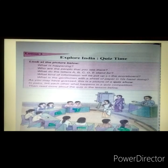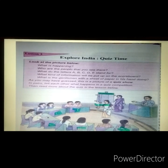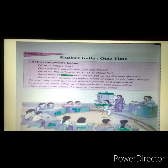What kind of information will be put up on the scoreboard? The scoreboard will show information labeled A, B, C, D, E. What kind of information will be put up on the scoreboard?